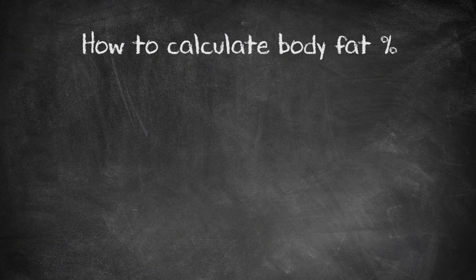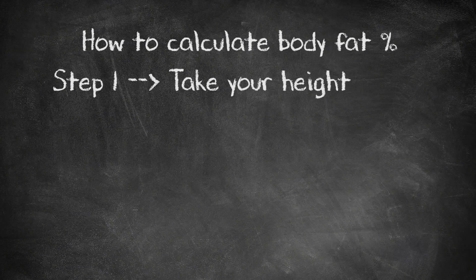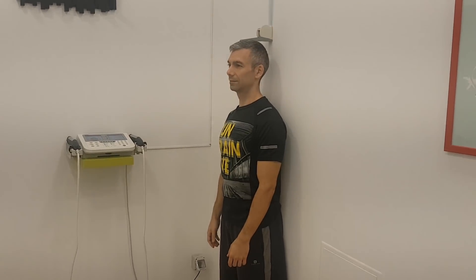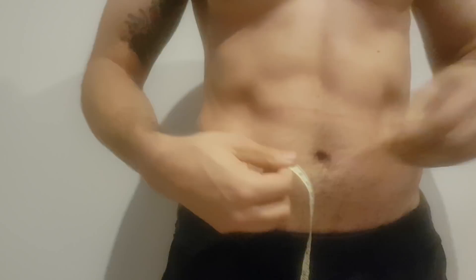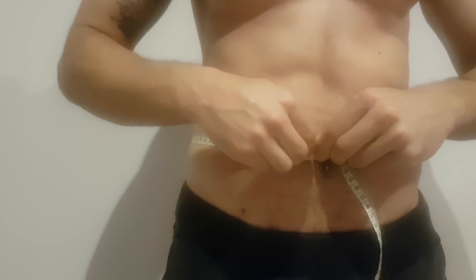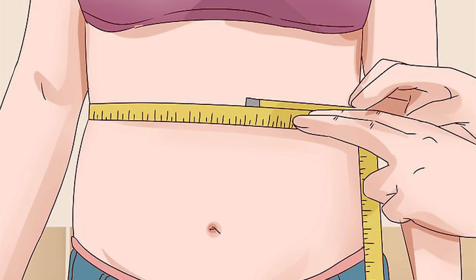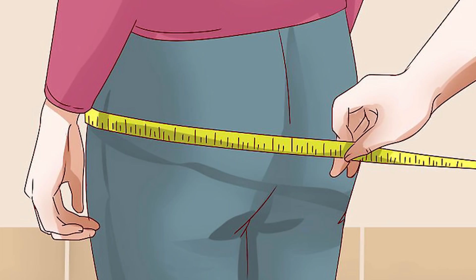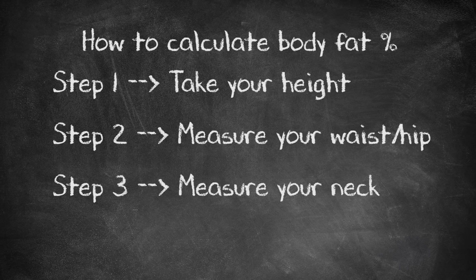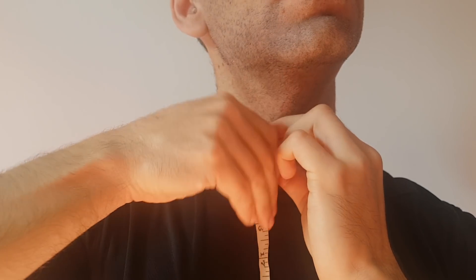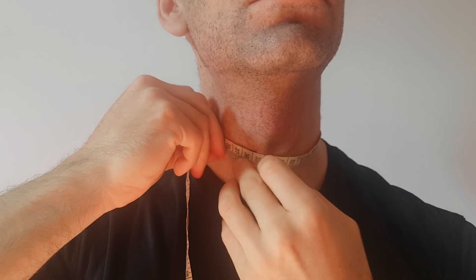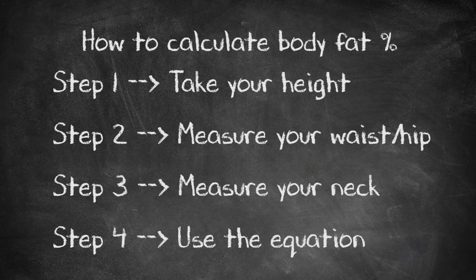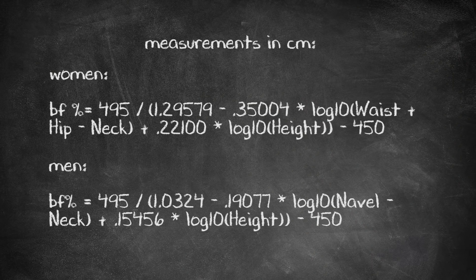Here's how you do it. Step 1: if you don't know it already, take your height. Step 2: measure your waist. Men must take the circumference of the abdomen at the level of the navel; women must take the waist at the narrowest point. In addition, women must take the measurement of their hips at the widest point. Step 3: measure your neck at its narrowest point, which is below the Adam's apple for men. Step 4: calculate the estimate of your body fat percentage using the formula shown.